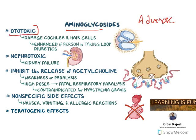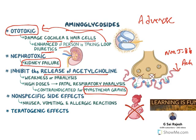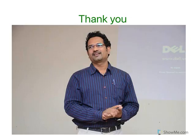Regarding adverse effects of aminoglycosides: they are ototoxic, damaging the cochlea and hair cells, resulting in hearing impairment. This is enhanced when combined with loop diuretics, which also cause ototoxicity. They are also nephrotoxic, causing kidney damage. They inhibit the release of acetylcholine, affecting skeletal muscles and potentially causing neuromuscular junction block — therefore they are contraindicated in patients with myasthenia gravis. Non-specific adverse effects include nausea, vomiting, allergic reactions, and teratogenic effects, making them contraindicated in pregnant women.